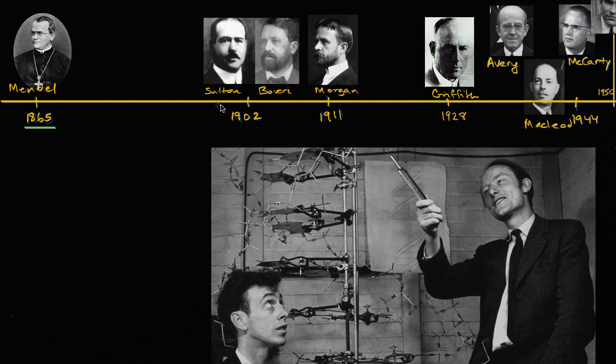In 1902, Bovery and Sutton come up with the chromosome theory based on seeing how chromosomes separate and pair during cell division, and saying, hey, those seem to map up quite well to what Mendel described by these heritable factors.